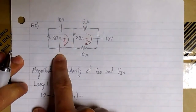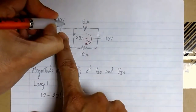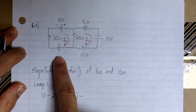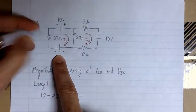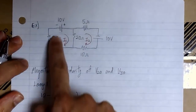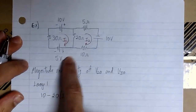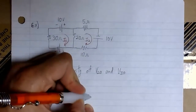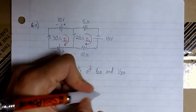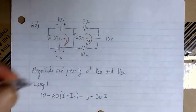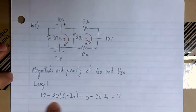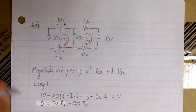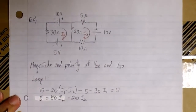Then we have the 5 volt source, and here's a detail you should note. This 5 volt source has a different polarity with respect to the 10 volt source we had before, that's why we have to subtract. We were going from minus to plus in the direction of I1 for the 10 volt source, but for the 5 volt source we're going from plus to minus — a different polarity. Then we have the drop across 30 ohms, which is 30 times I1.